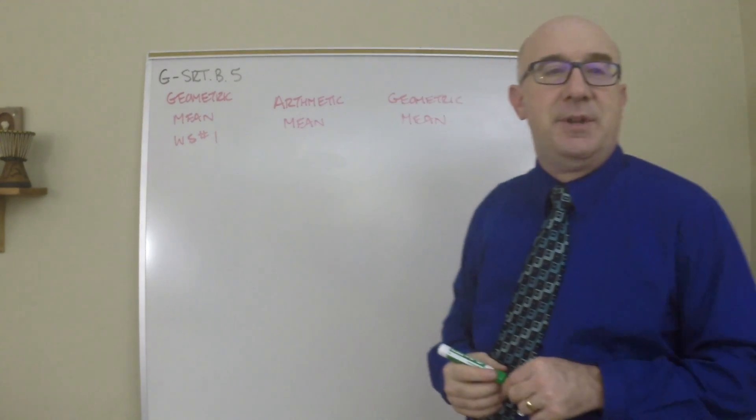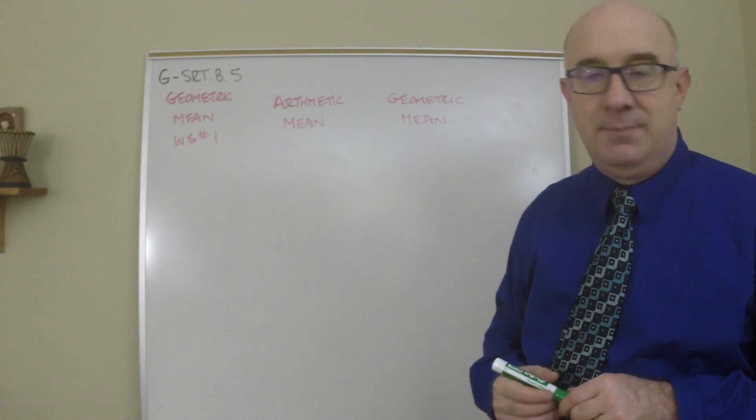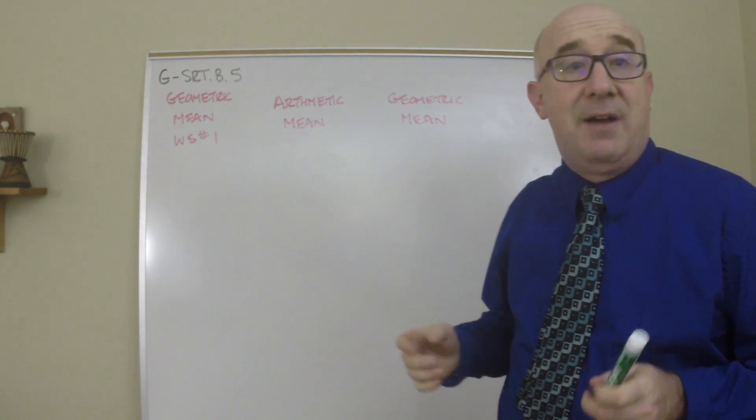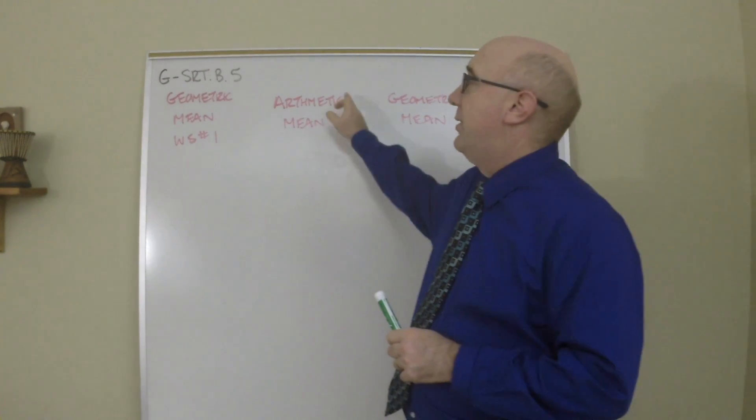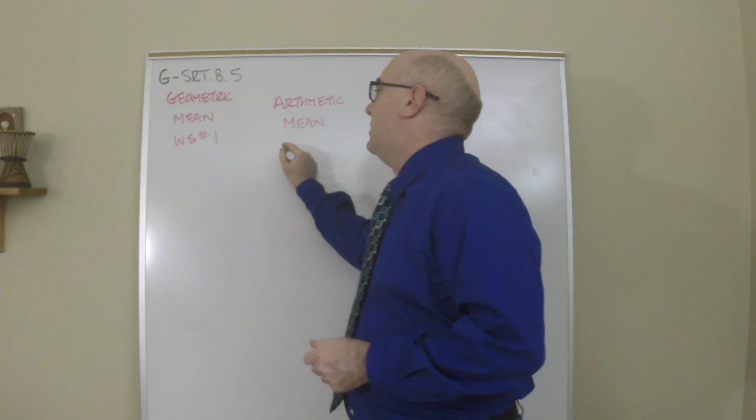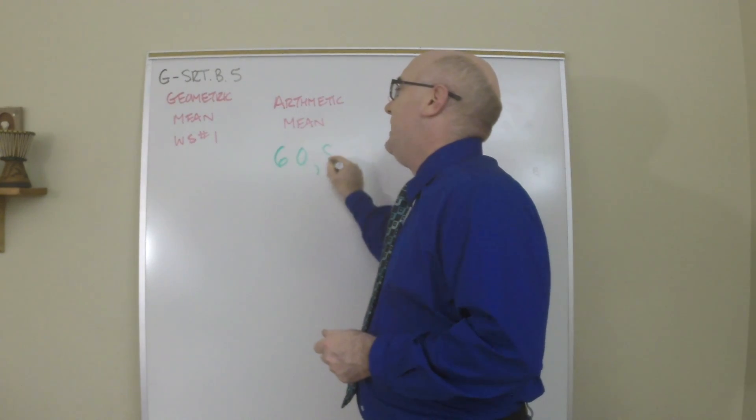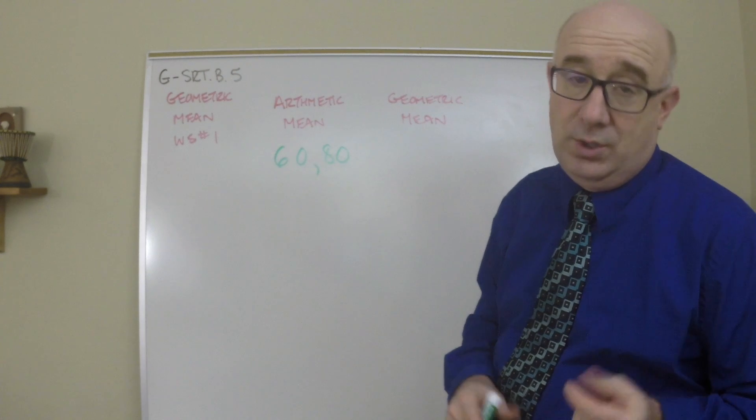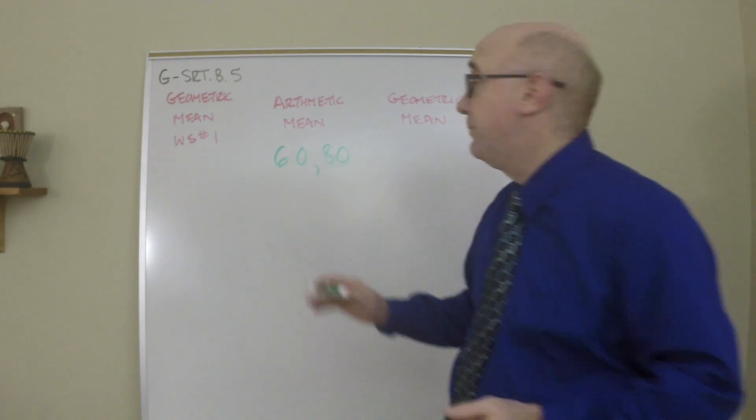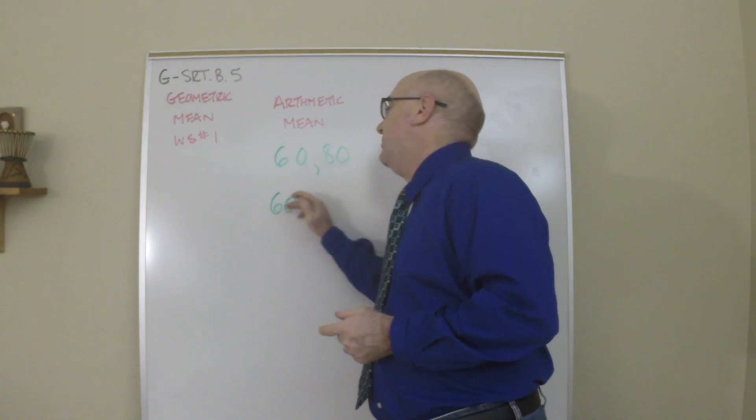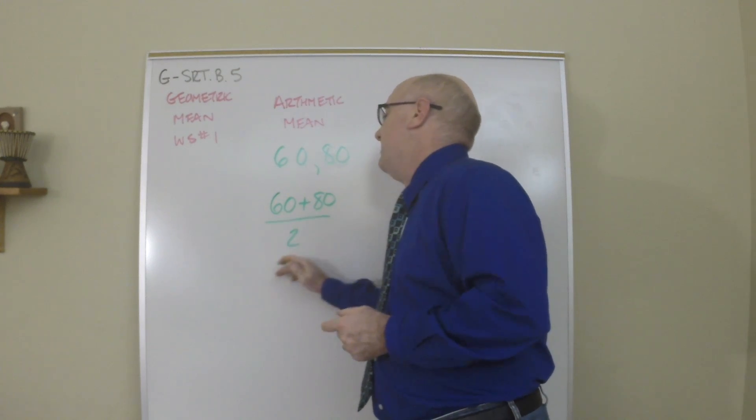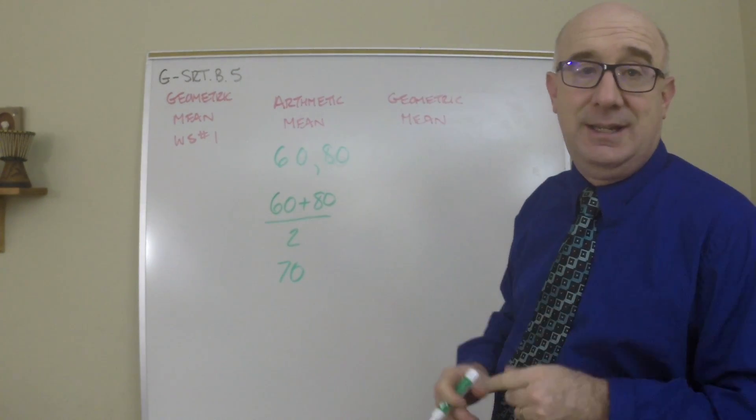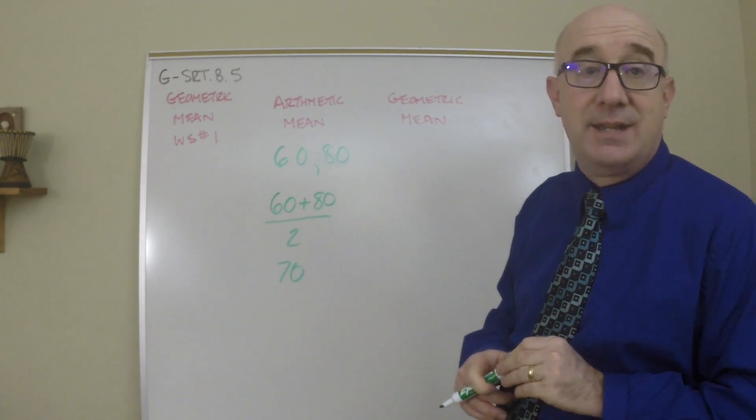So this first worksheet deals with something called a geometric mean. Now you've heard of a mean before. It's like an average. That's the arithmetic mean. So if you were given two numbers like 60 and 80, and you were asked for their arithmetic mean, or usually just called the mean, you would take their values and add them together and divide by two.